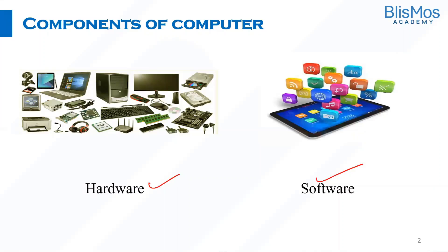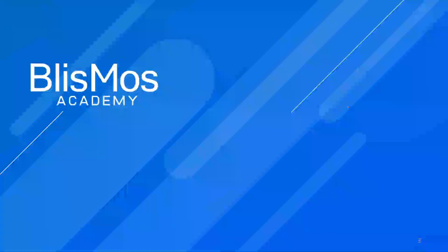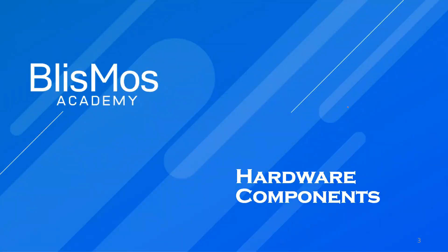You have multiple hardware components like monitor, RAM, disk, and printer — all these things are hardware components. And the software which is needed to work on is also one of the very important components of the computer. So at a high level, you have hardware components and software components.